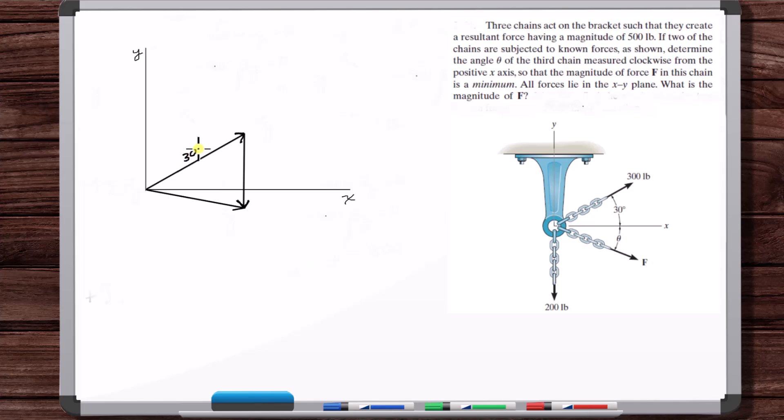This is 300. This is 200. This is 30 degrees. And this is theta. This is the literal theta because F is going to be in this direction. So this is part of our answer.